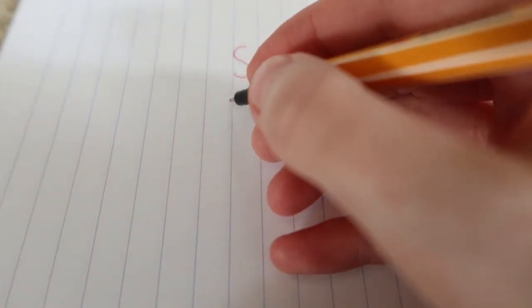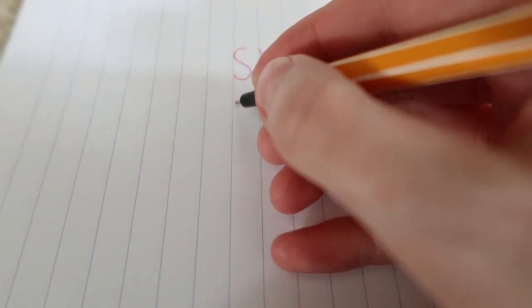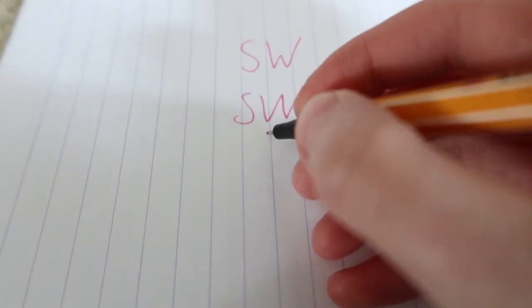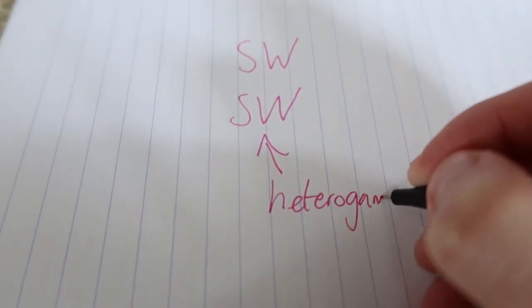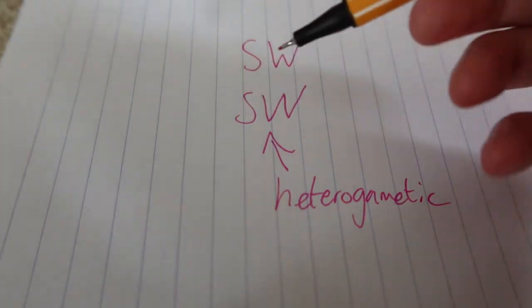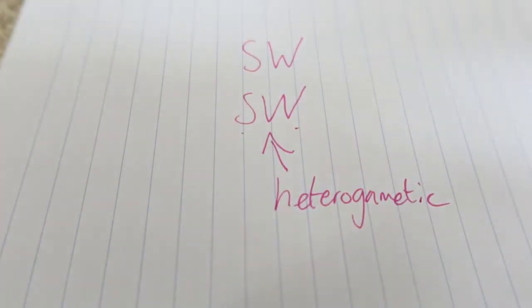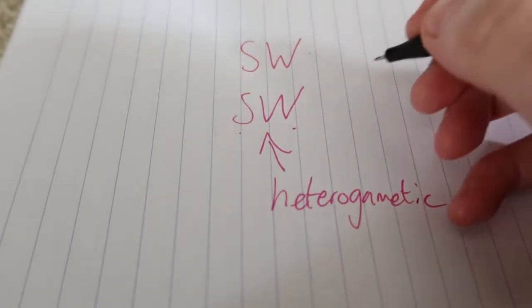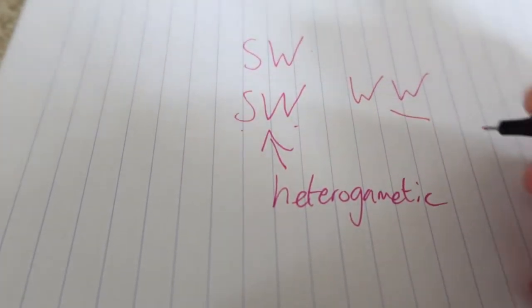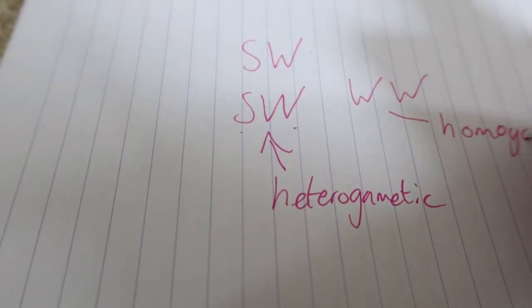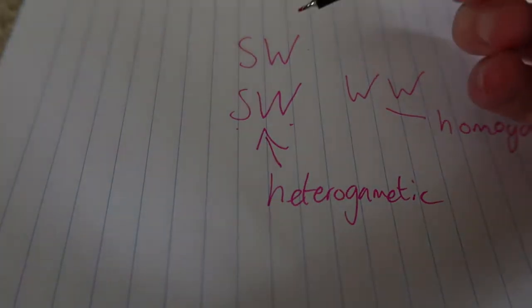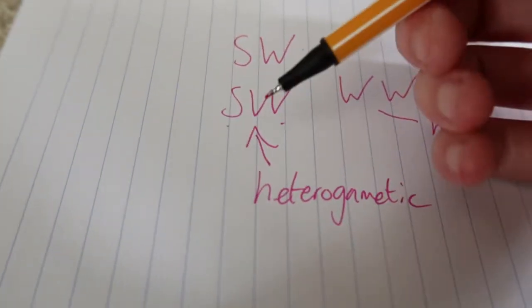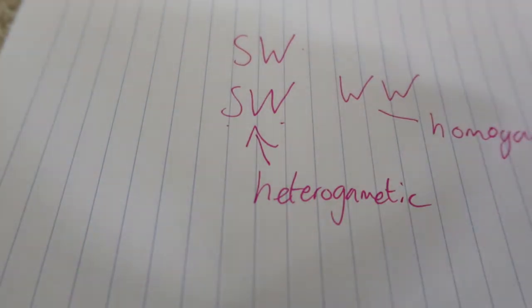This system is the ZW system, and it's found in different species. In this system, females are ZW and they are heterogametic, meaning they express two different chromosomes. To inherit the Z that makes female, you inherit that from the female line.